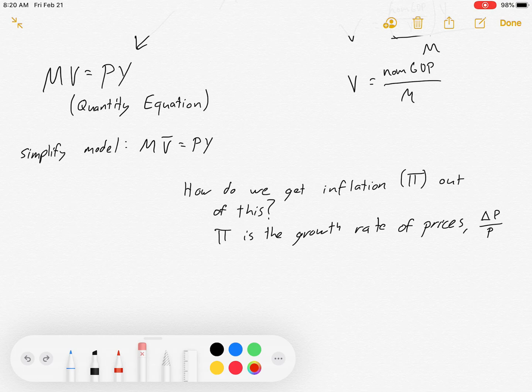By the way, if you watch a lot of my micro videos, pi is always profit. In macro, pi is always inflation. I'm not sure who decided to use the same symbol for both, but I don't feel like rocking the boat. So we're going to call it pi. Anyway, we need a growth rate in prices, so we're going to have to meddle with our quantity equation just a little bit.